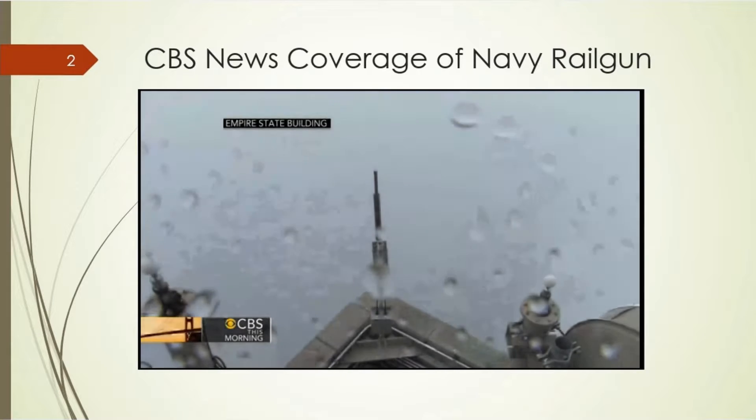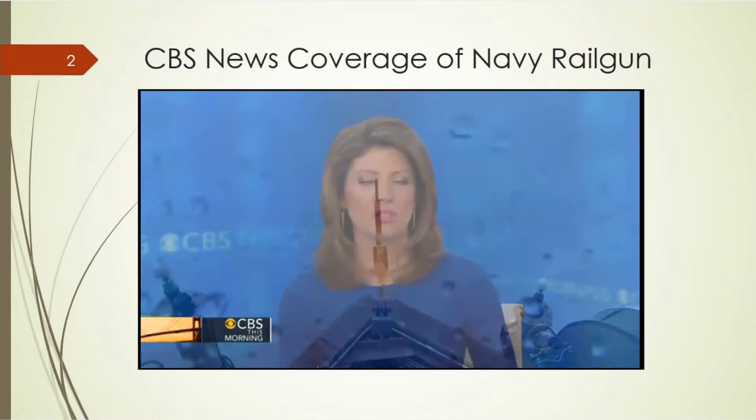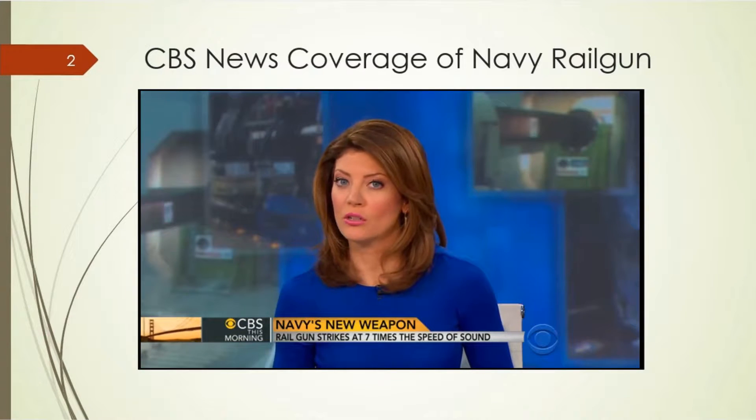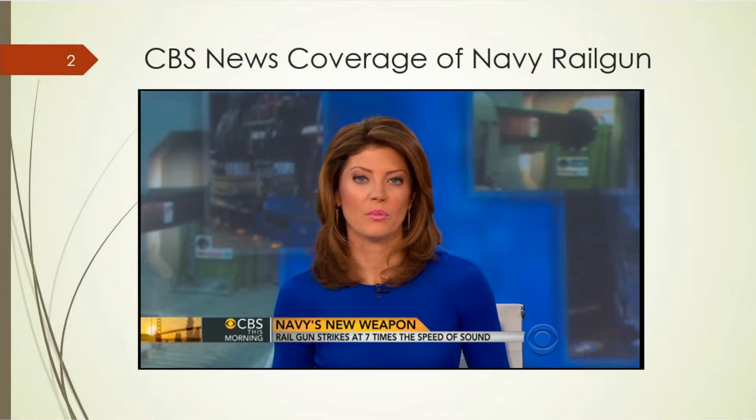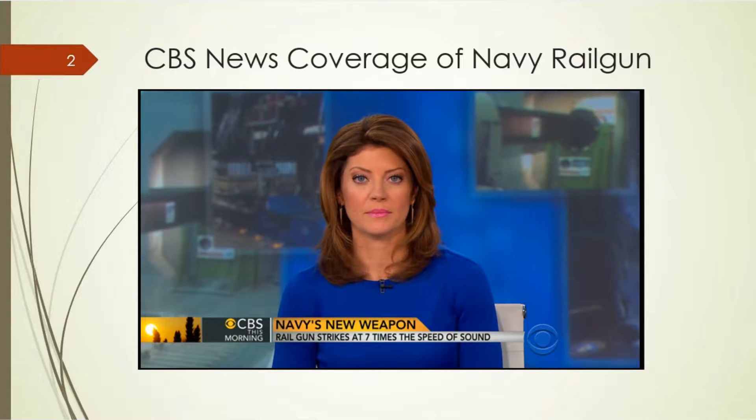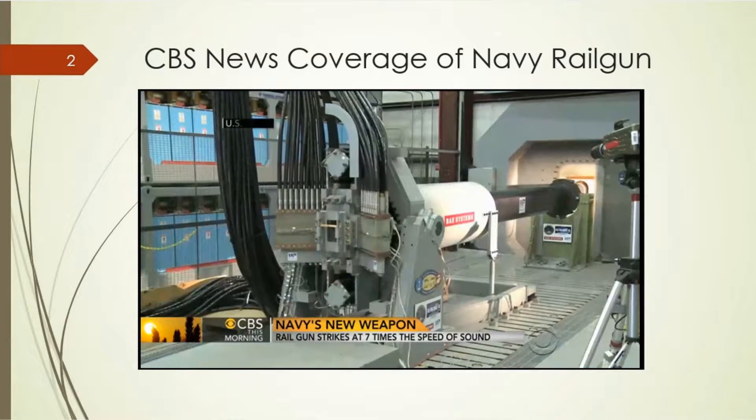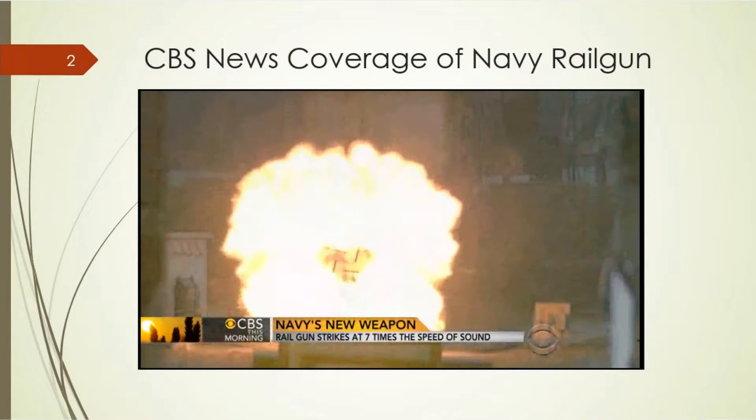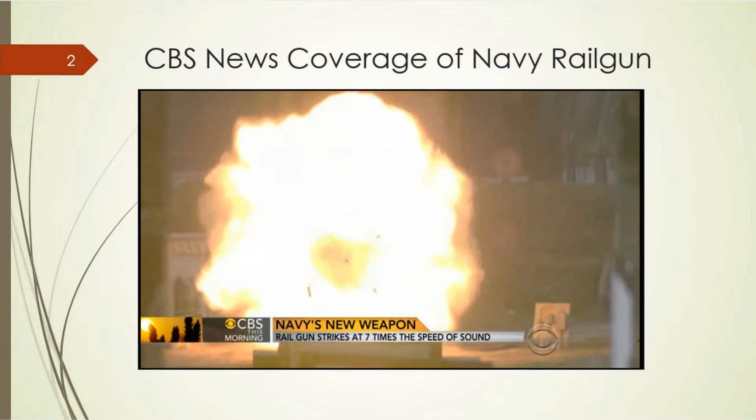The Navy has unveiled a new secret weapon that developers call a railgun. This new high-tech weapon is smaller, cheaper, and more destructive. As David Martin reports, it could dramatically change the way America fights wars. Propelled by an electromagnetic pulse, the projectile comes out of the barrel in a fireball of molten metal.